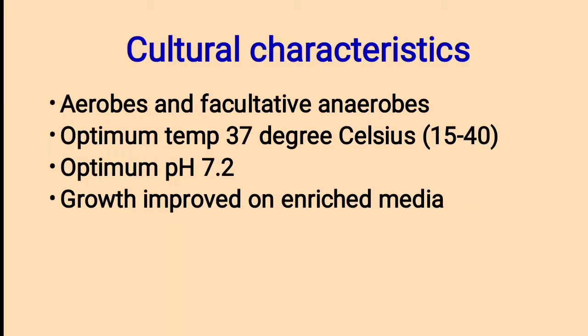Cultural Characteristics. Corynebacterium diphtheriae are aerobes and facultative anaerobes. The optimum temperature is 37 degree Celsius, with a range between 15 to 40 degree Celsius. The optimum pH is 7.2 and growth is improved on enriched media.